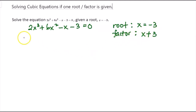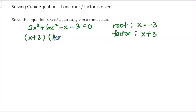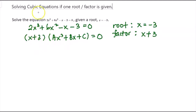By using the comparing coefficient method, I will write this cubic equation in the form of (x plus 3) multiplied by a quadratic factor. The linear factor x plus 3 comes from the given root, and we need a linear times a quadratic to produce a cubic. I will expand this to make it easier to compare coefficients.